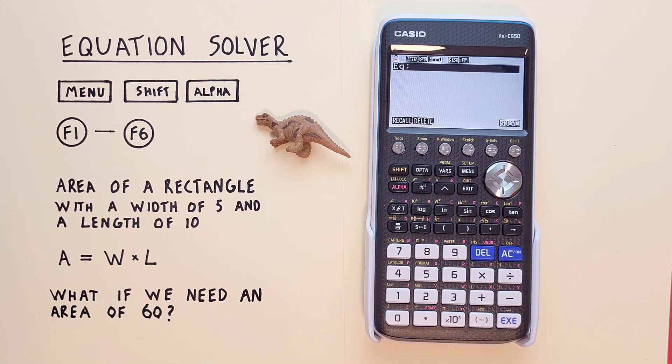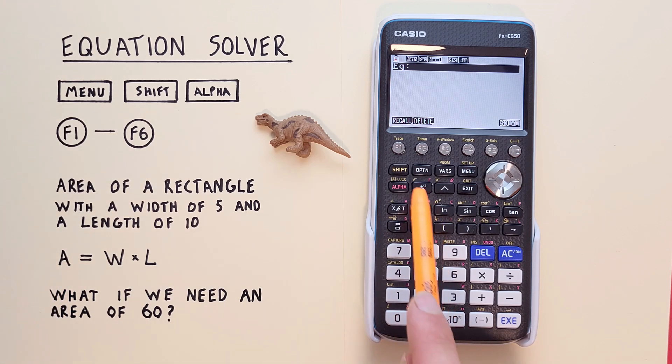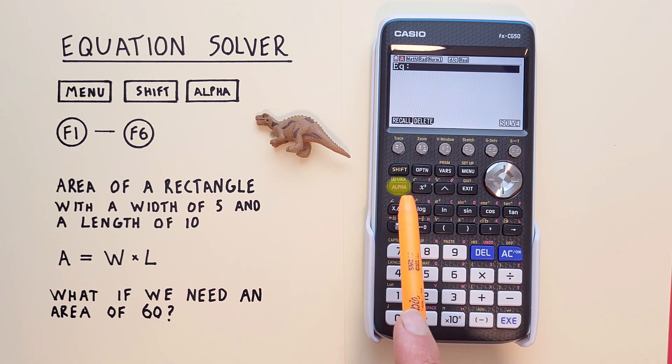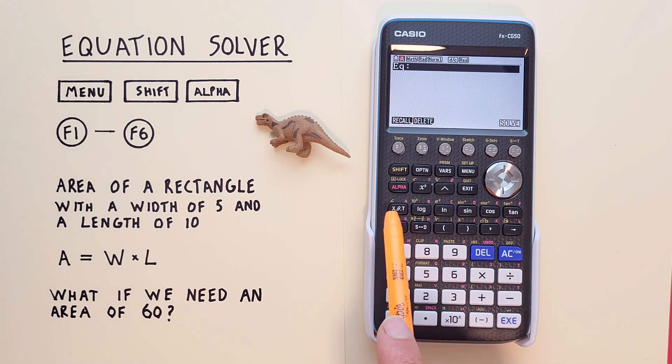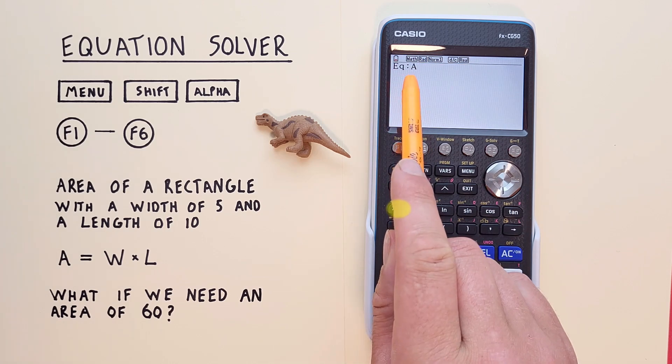To enter this equation on our screen, we can start with the A. And to enter letters, we hit alpha first, and then select the red letter above the key. So we see alpha A here. There we go. A.